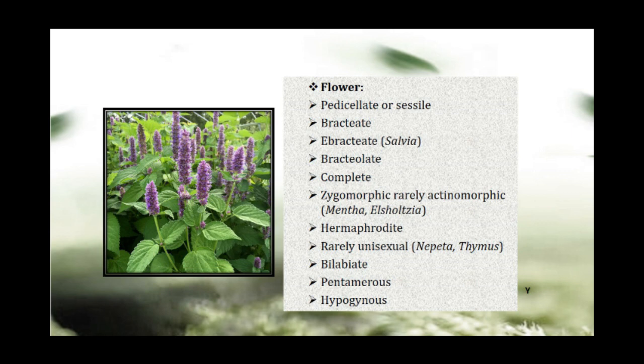The flower is hermaphrodite or bisexual, meaning both androecium and gynoecium are present in the same flower. Rarely unisexual in Thymus species and Nepeta species. The flower is bilabiate, meaning the corolla limb is divided into two lips — upper and lower — as seen in the picture on the right side.